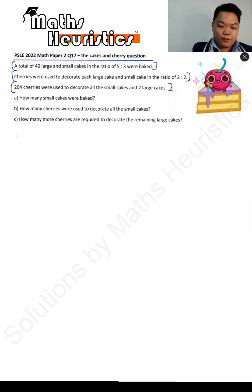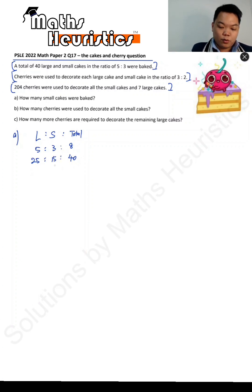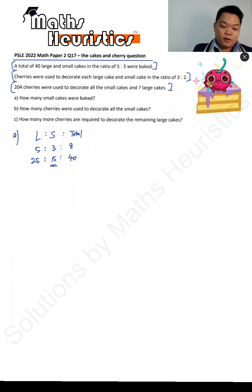The first part is pretty straightforward. If large to small is in the ratio of 5 to 3, then your total number of units is 8. Since the total is 40, large cakes must be 25 and small cakes must be 15. So you know that 15 small cakes were baked.